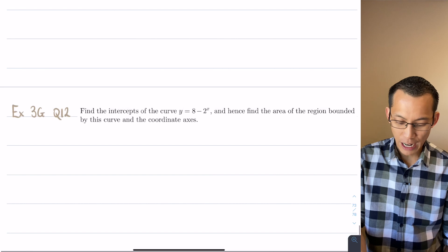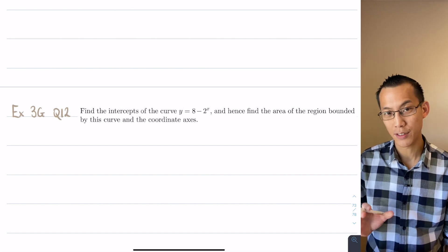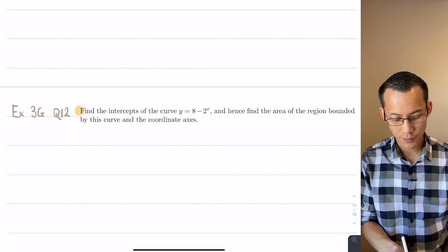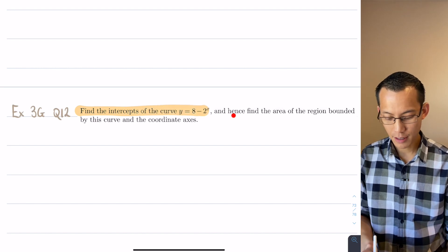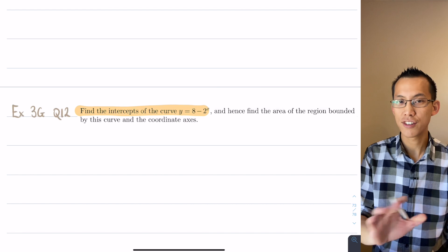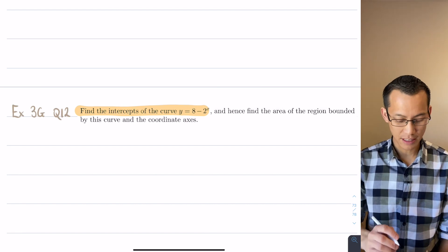So the question very helpfully scaffolds for us, it sort of gives us a nudge in the right direction. It says find the intercepts of this curve and then hence a bunch of other stuff. So let's just do one thing at a time, let's find the intercepts.